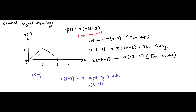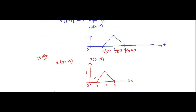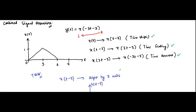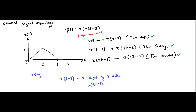So for this original signal, to get the final result we go through these three individual signal operations. As you practice more questions, you can do all of these in your head and directly figure out the final waveform. But if you are a beginner, go the lengthy way — do them individually and then get the final result, to understand how each individual signal operation is happening.